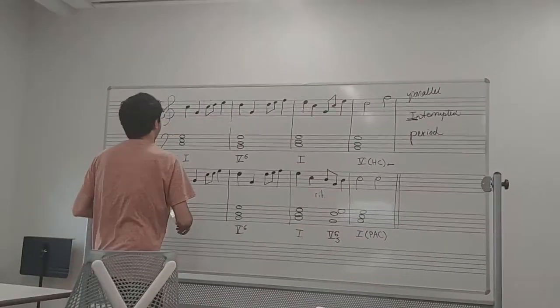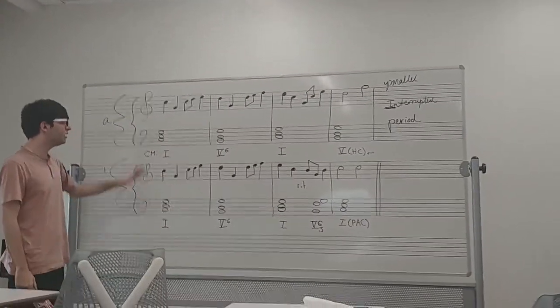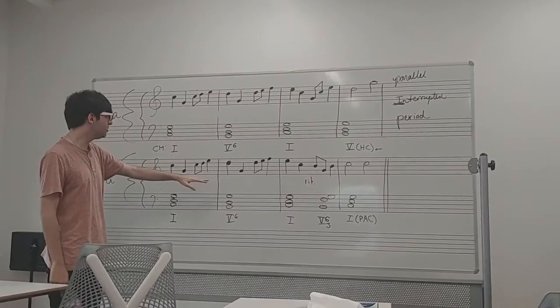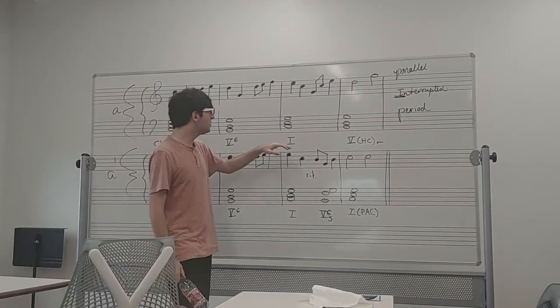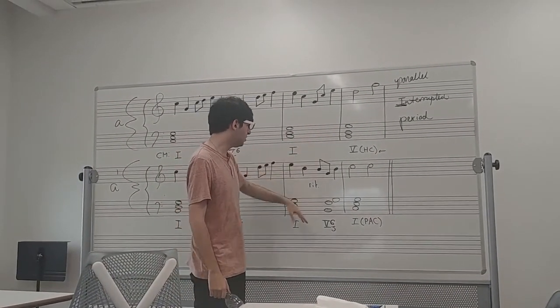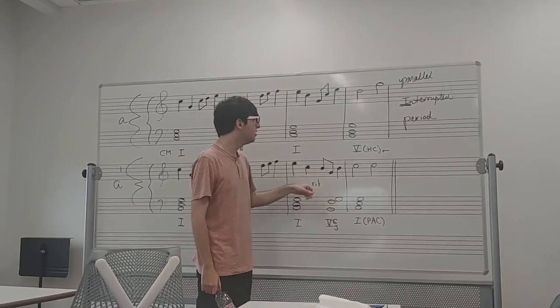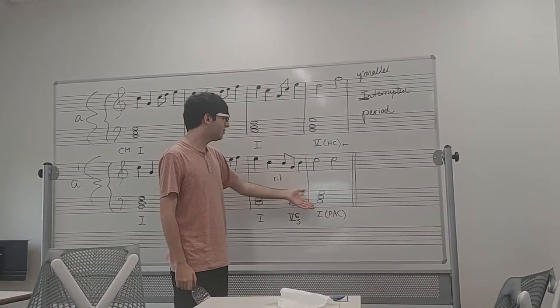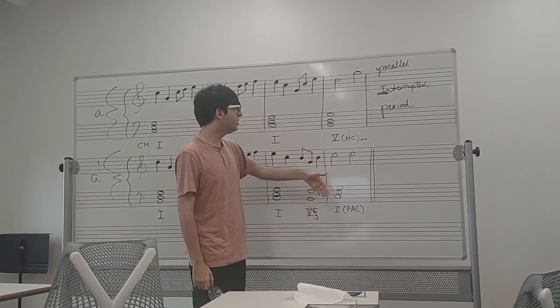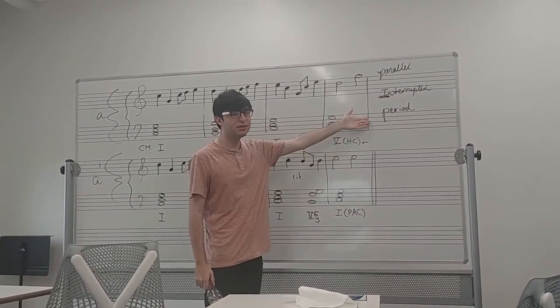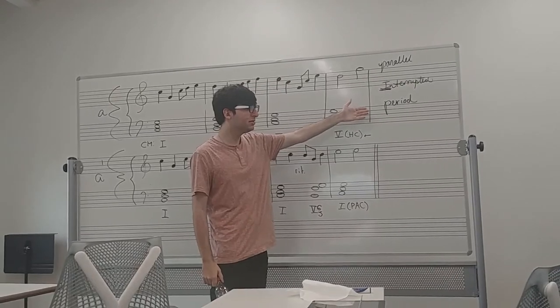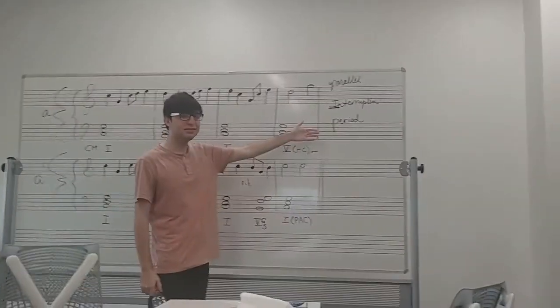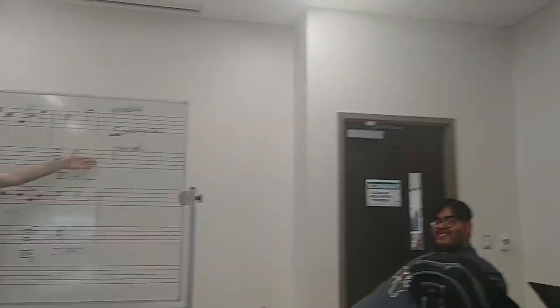So A and A Prime because they are similar. First two measures are identical. The only difference between this one is that it gets to the five earlier and that's a five-six-five, it's in inversion. You know what bro, it's still a seven chord. And then it ends up in the tonic, therefore making it a period. Right? Bye!